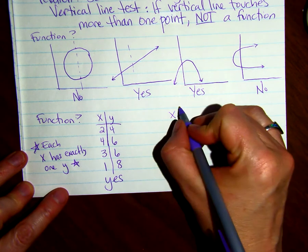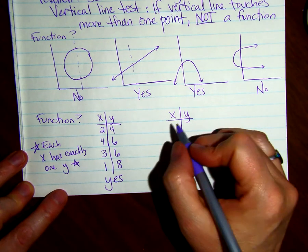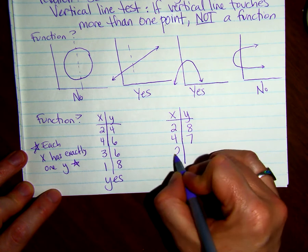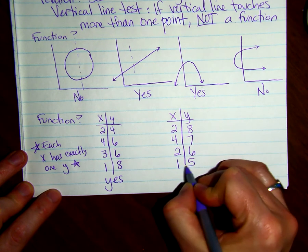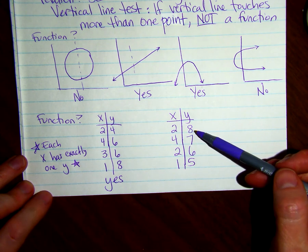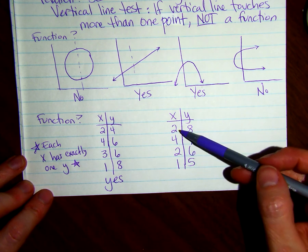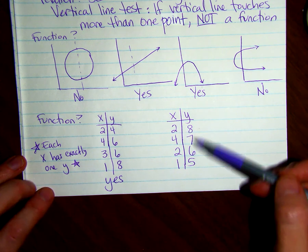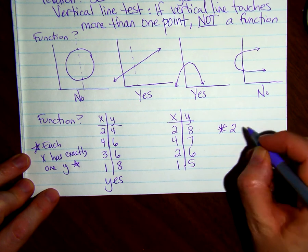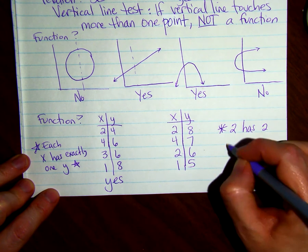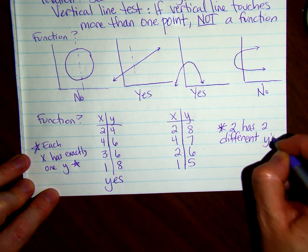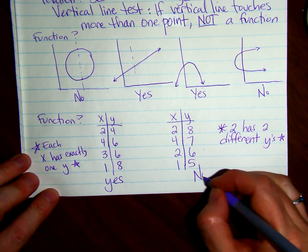How about this one? Is this a function? So you look at each x and make sure there's only one y that pairs with it. Well, here's a 2 that pairs with an 8, and here's another 2, and it pairs with a 6. So the 2 has two different y's. So this is not a function.